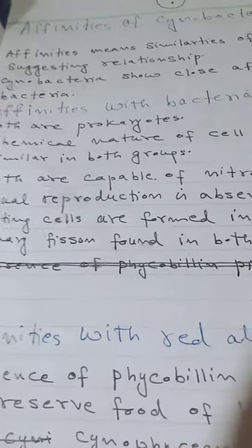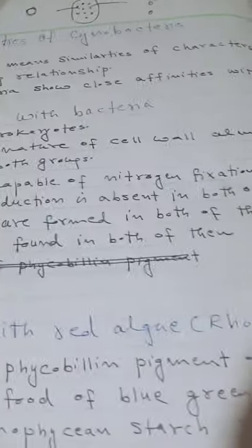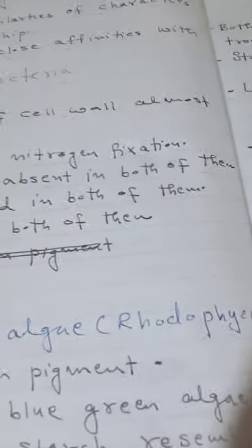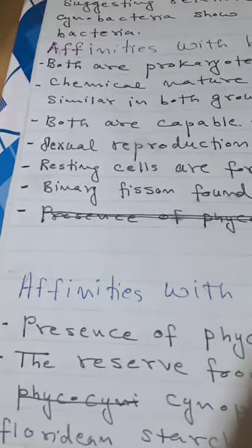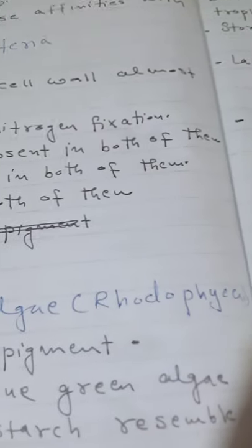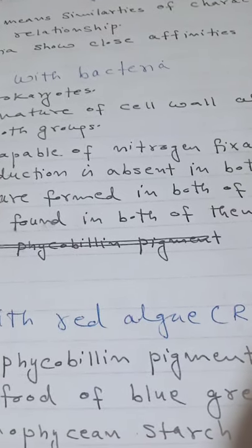Third: both are capable of nitrogen fixation — converting atmospheric nitrogen into nitrate. Fourth: sexual reproduction is absent in both; true sexual reproduction does not occur in bacteria or cyanobacteria. Fifth: resting cells are formed in both — endospore in bacteria and akinete in cyanobacteria. Sixth: binary fission occurs in bacteria, and likewise in unicellular cyanobacteria.